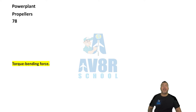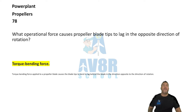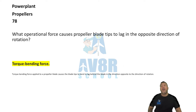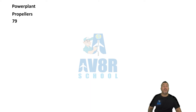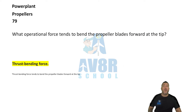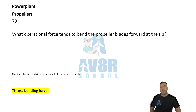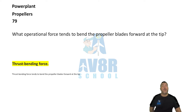Number 78: The operational force that causes propeller blade tips to lag in the opposite direction of rotation is the torque bending force. Number 79: The operational force that tends to bend the propeller blades forward at the tip is the thrust bending force.